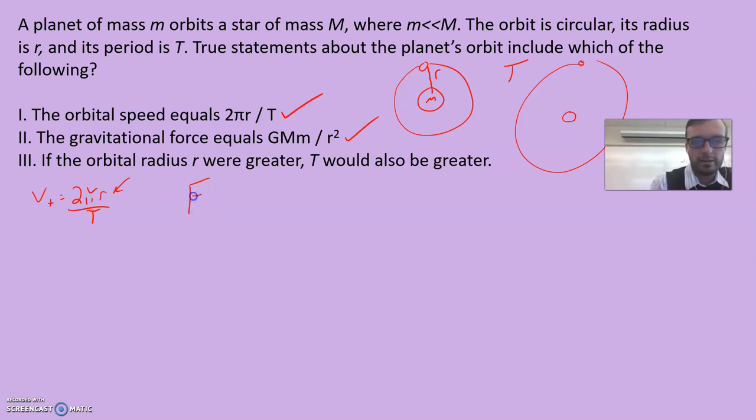Just intuitively, if you're orbiting further away, doesn't it seem like it would take longer? Like Mercury is very close to the sun. It has a very short year because it goes around really quick. Earth has a longer year than Mercury because it takes a longer time to go around.